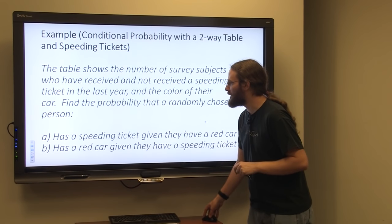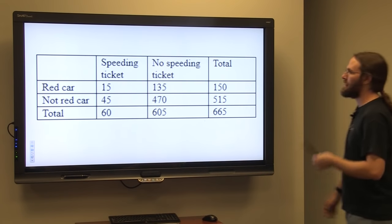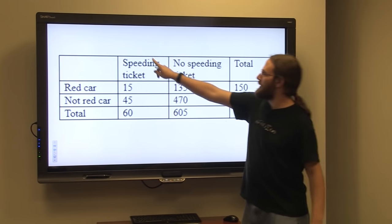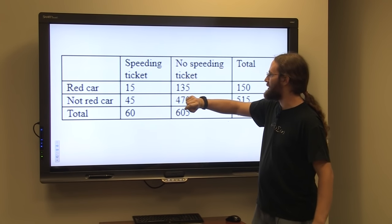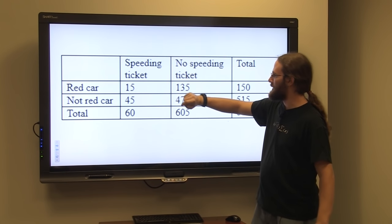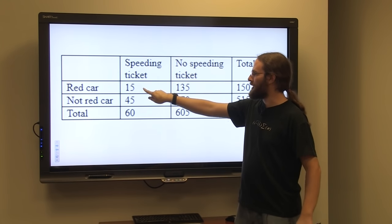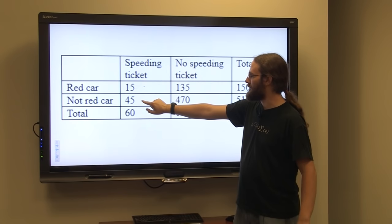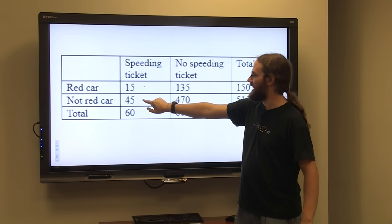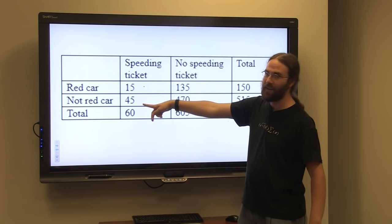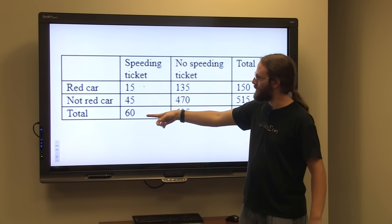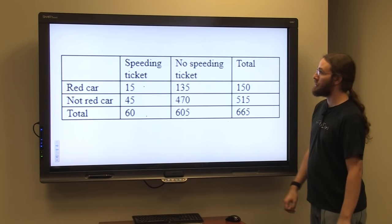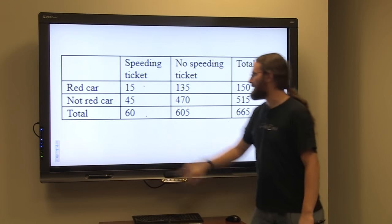So we're going to look at the data now. This column represents speeding tickets. There are 15 red cars that have received speeding tickets, 45 non-red cars that have received speeding tickets, and 45 plus 15 would be 60 — there are 60 cars total that have received speeding tickets.